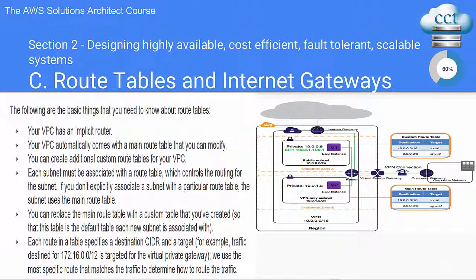The next thing we're going to discuss are route tables and internet gateways, which tie in with designing our highly available, cost-efficient, fault-tolerant, scalable systems. We've talked about this before — it's a very important area, as section 2 accounts for 60% of the exam that you'll hopefully be undertaking soon for the solutions architect.